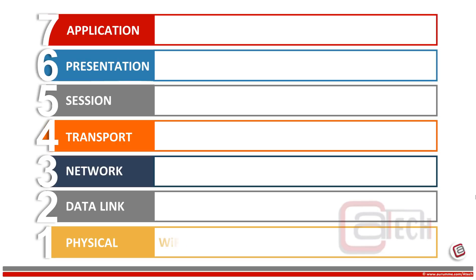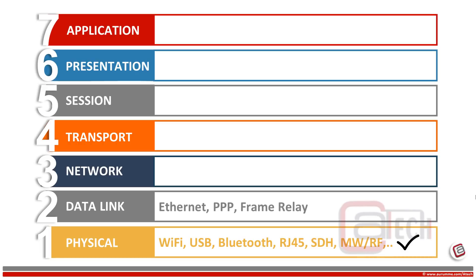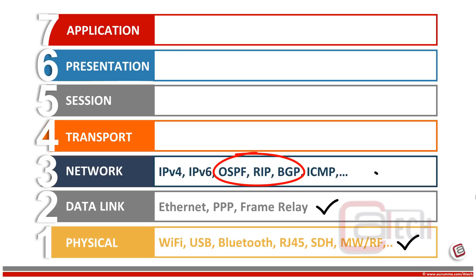Some important protocols on the physical layer are Wi-Fi, USB, Bluetooth, RJ45, SDH for transmission, microwave, radio frequency, and so on. Data link layer protocols include Ethernet, PPP, and frame relay. Network layer protocols include IPv4, IPv6, and routing protocols like OSPF, RIP, BGP, and so on.